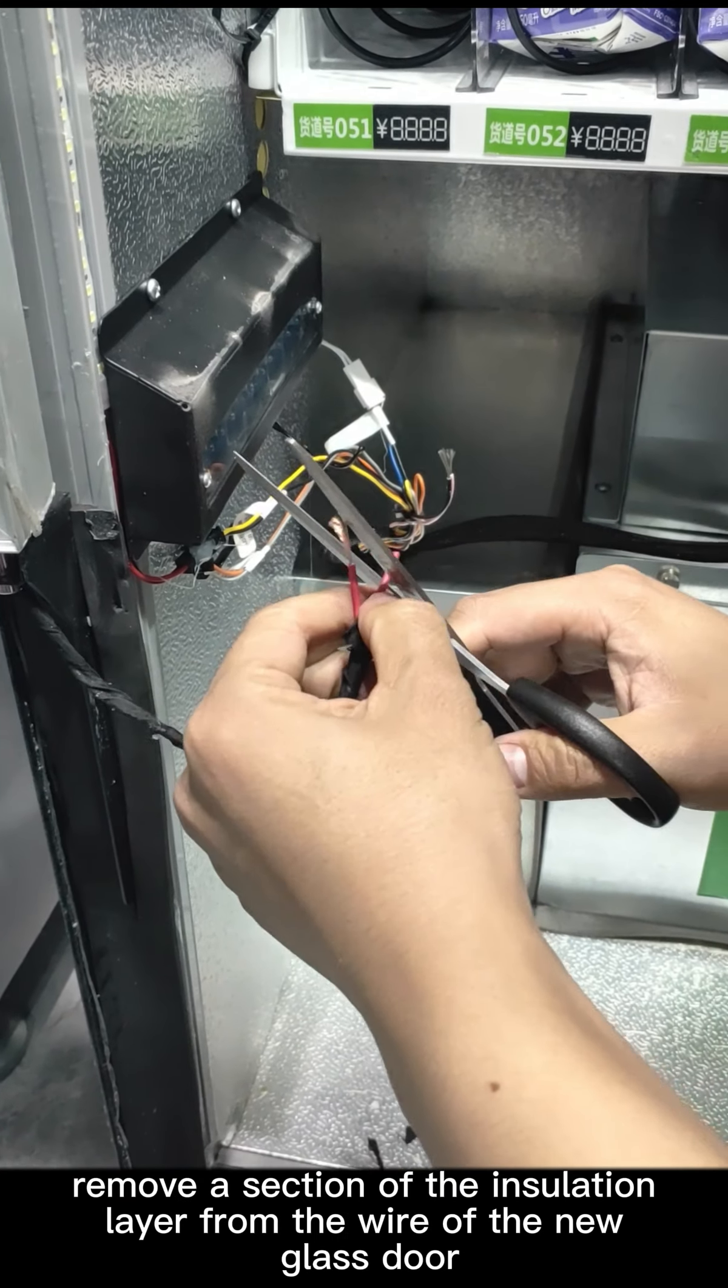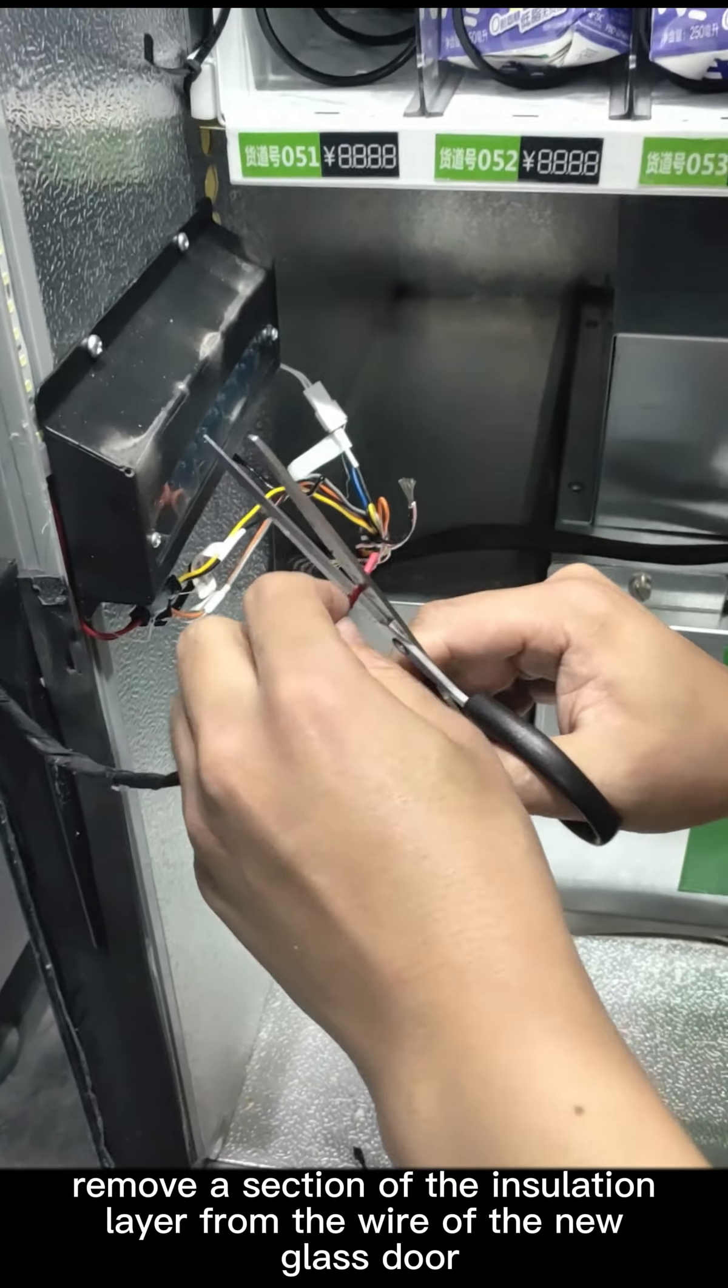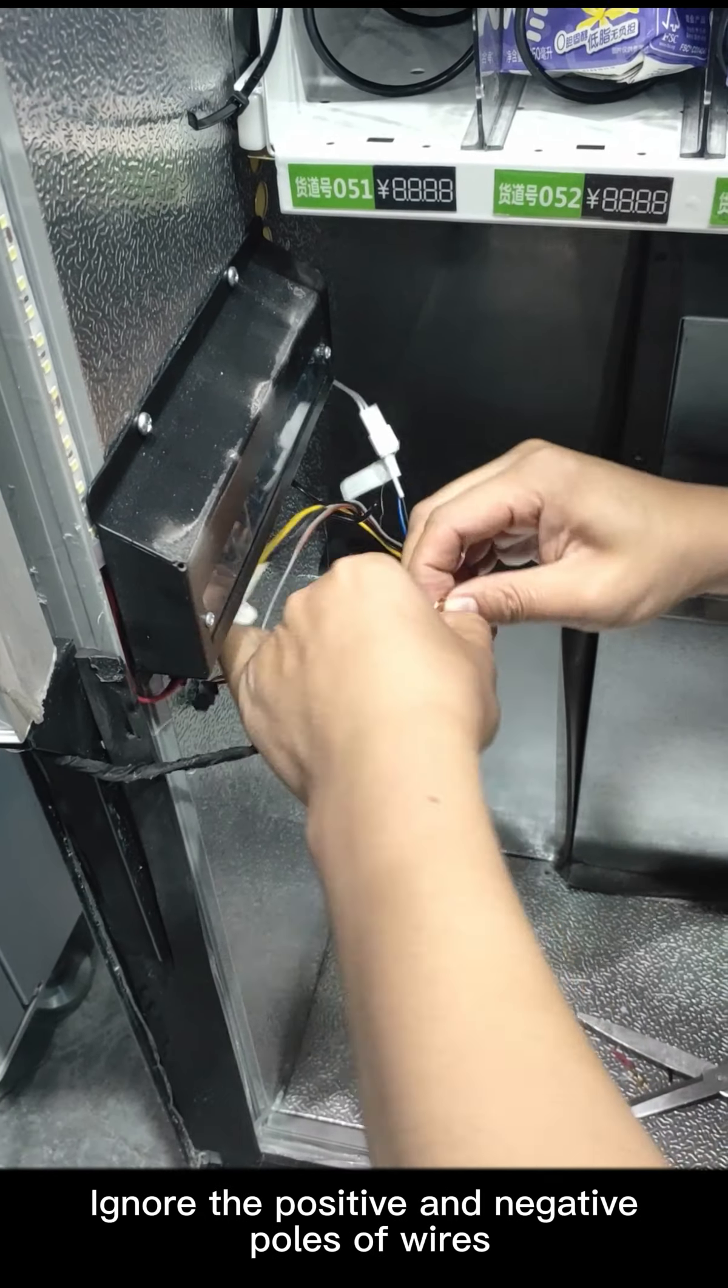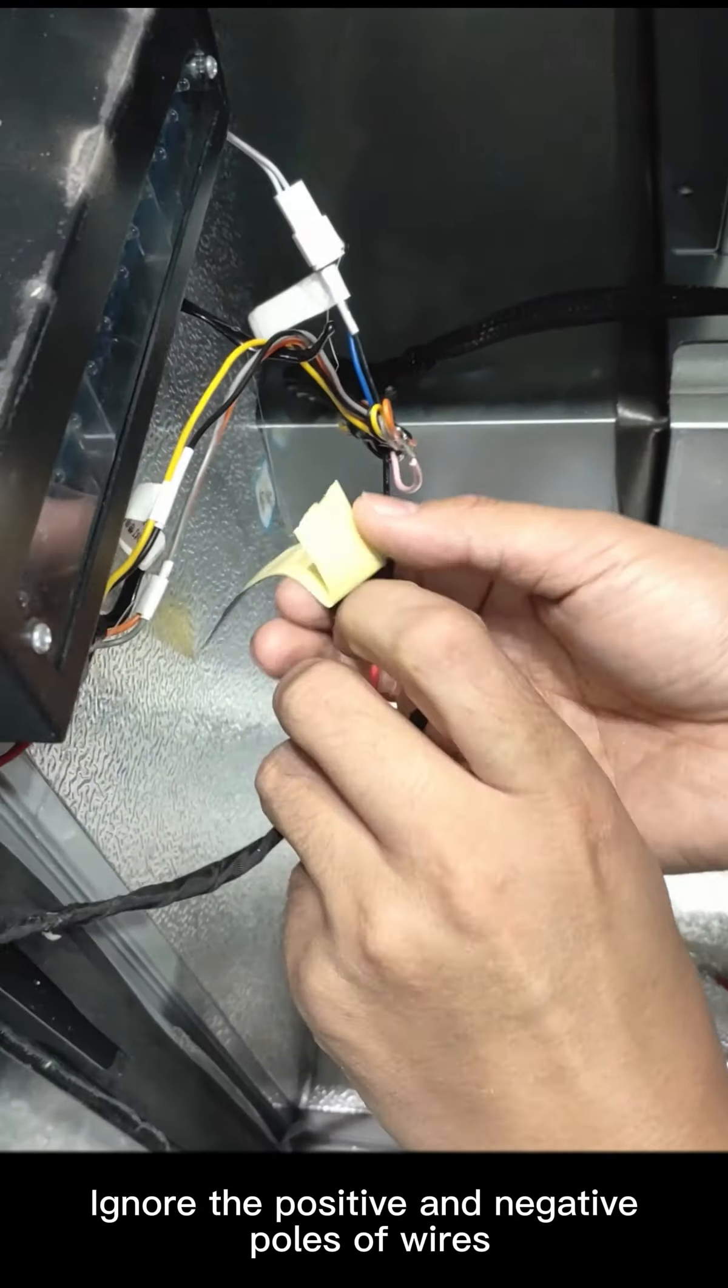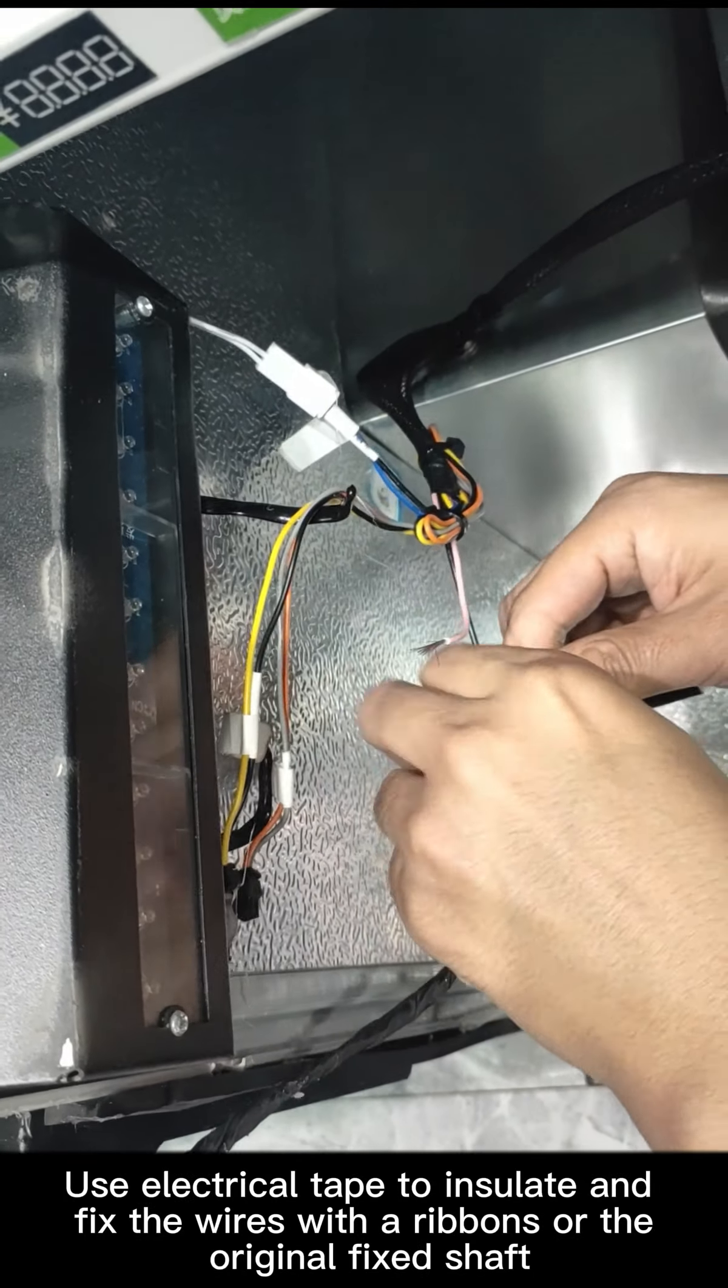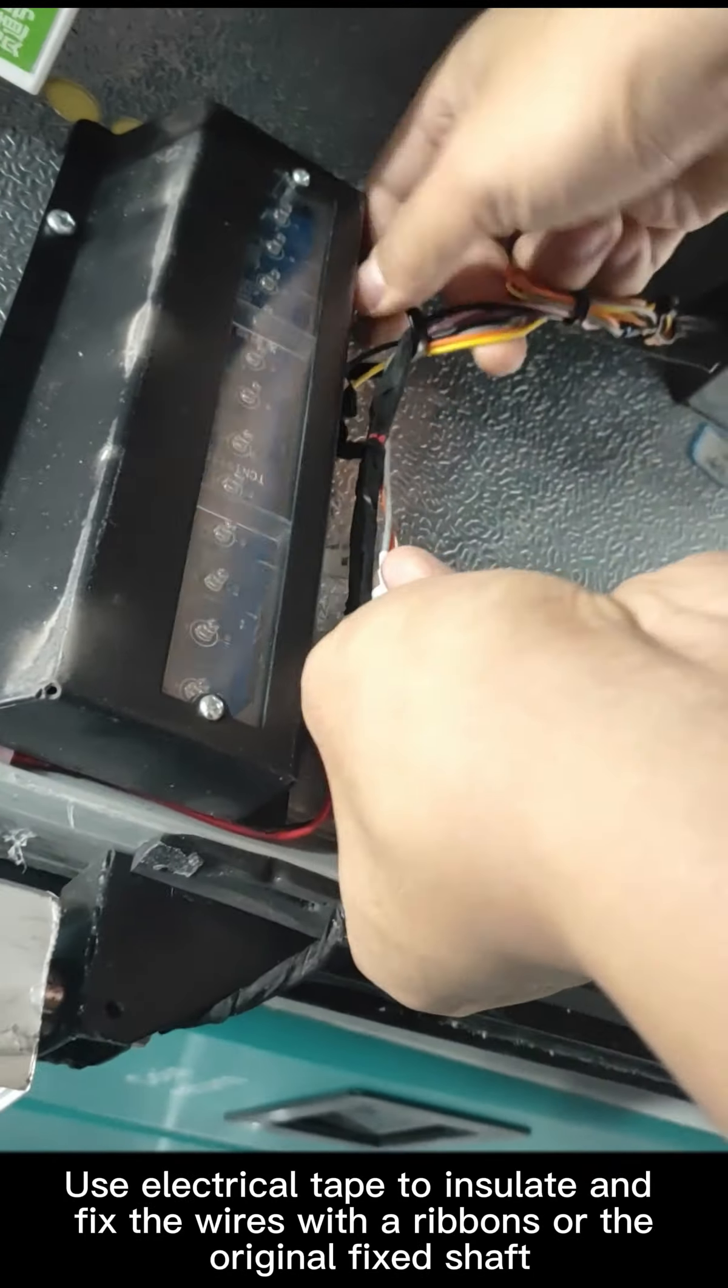Next, remove a section of the insulation layer from the wire of the new glass door and then connect it to the input terminal of the machine. Ignore the positive and negative poles of wires. After the connection is completed, use electrical tape to insulate and fix the wires with the ribbons or the original fixed shaft.